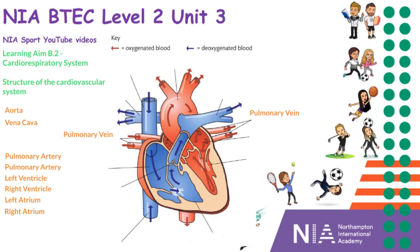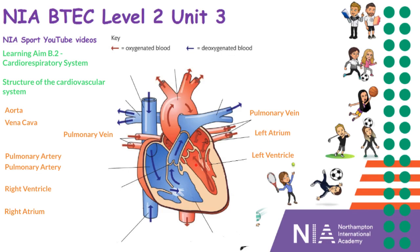When this oxygenated blood comes into the body, it comes into the left atrium — as you can see, this area just here. This then goes into the left ventricle. From the left ventricle, the blood is then pumped out through the aorta.